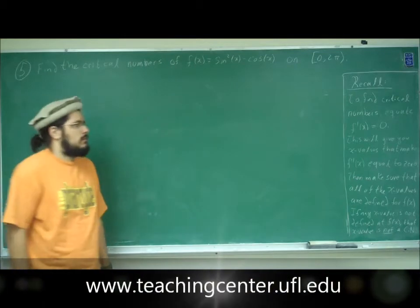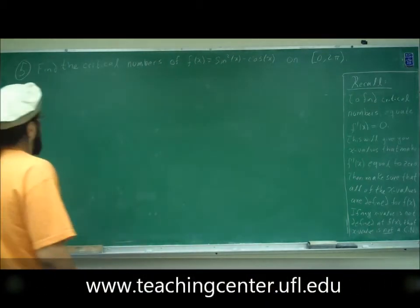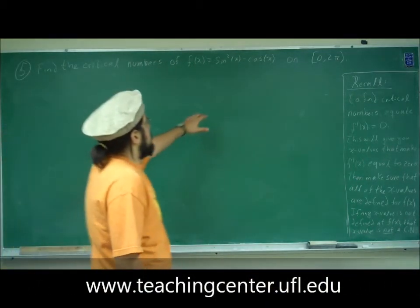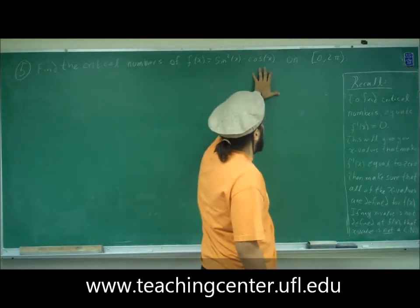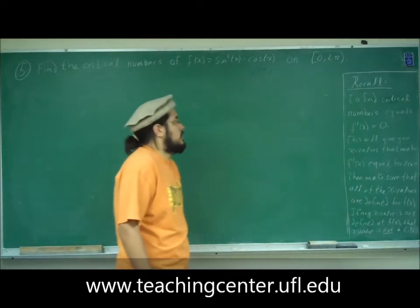All right, so this is problem five. Problem five reads, find the critical numbers of this function, sine squared x minus cosine of x, on this domain, from zero to two pi.